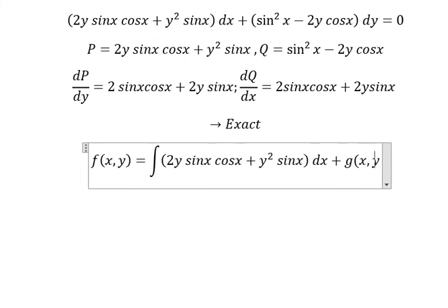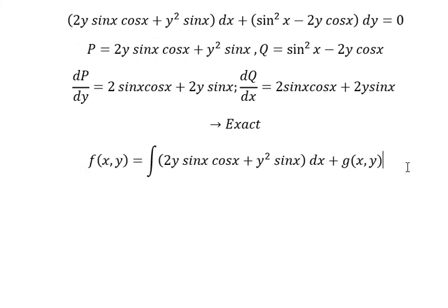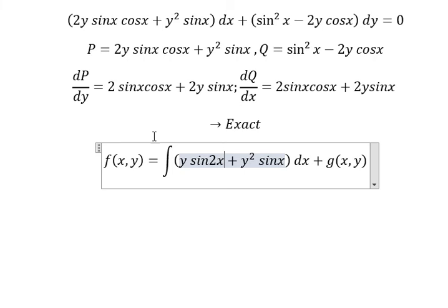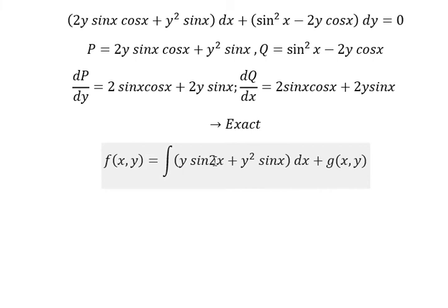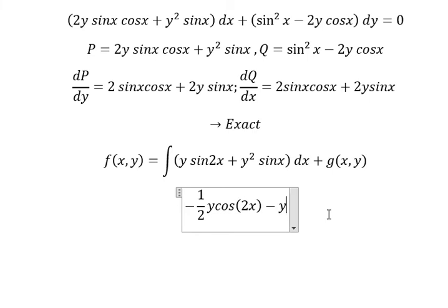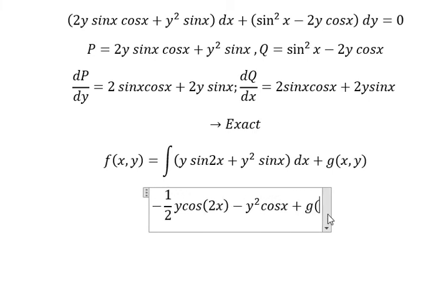Plus 3y. The integral of 2 sin x cos x — we can write this as sin 2x, because 2 sin x cos x equals sin 2x. The integral of sin 2x gives negative 1/2 cos 2x. The integral of sin x gives negative cos x. And now we have 3y.